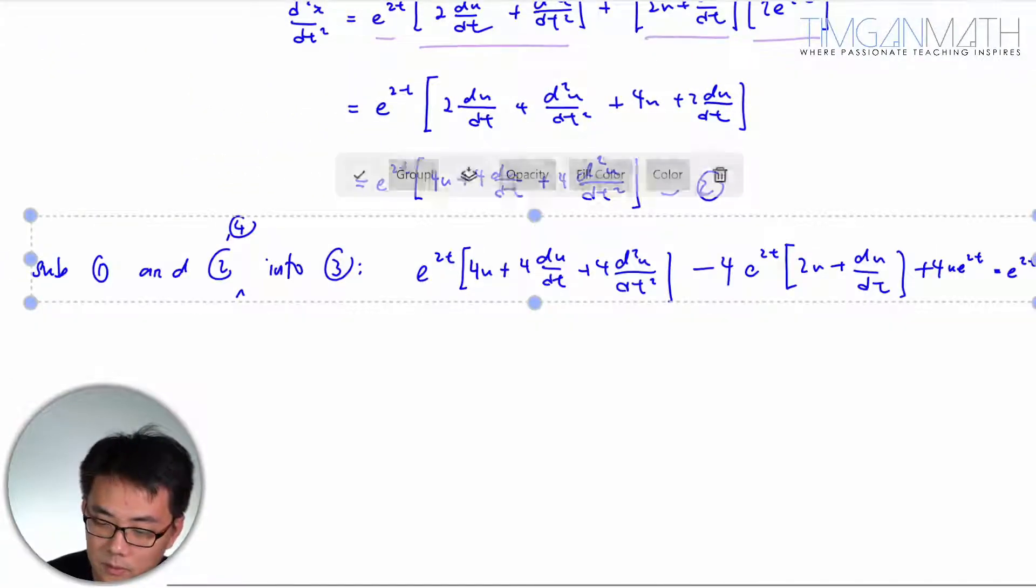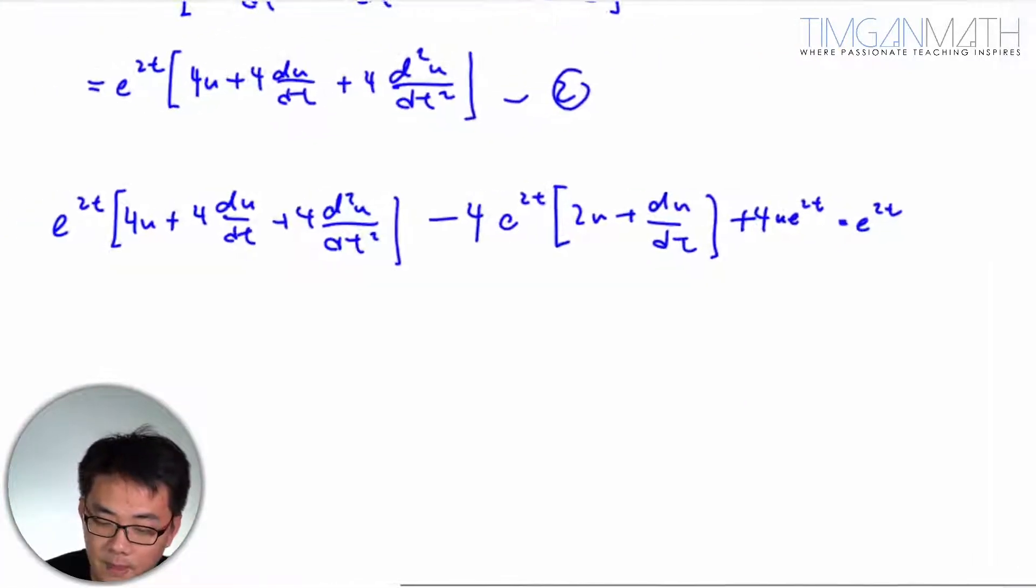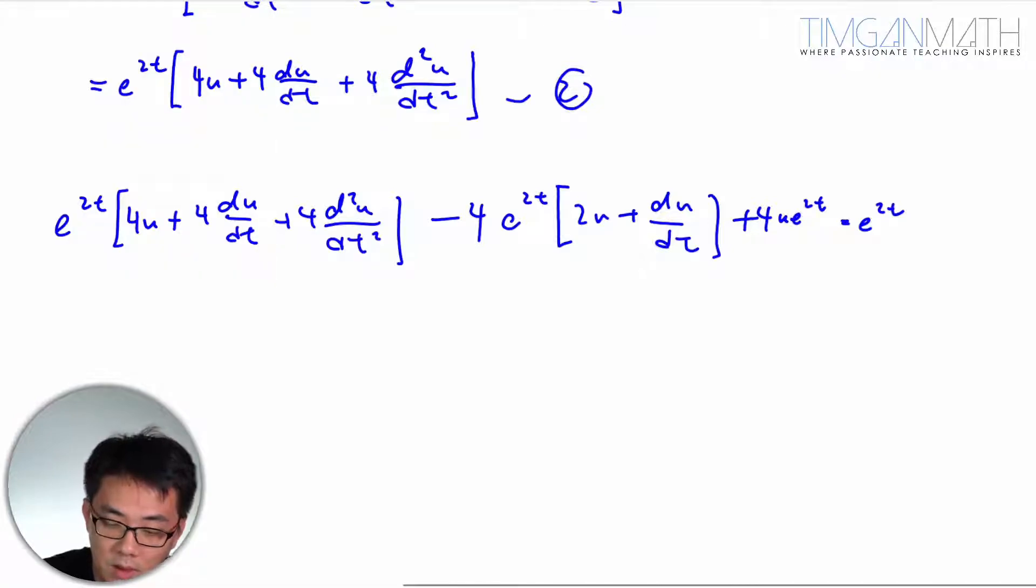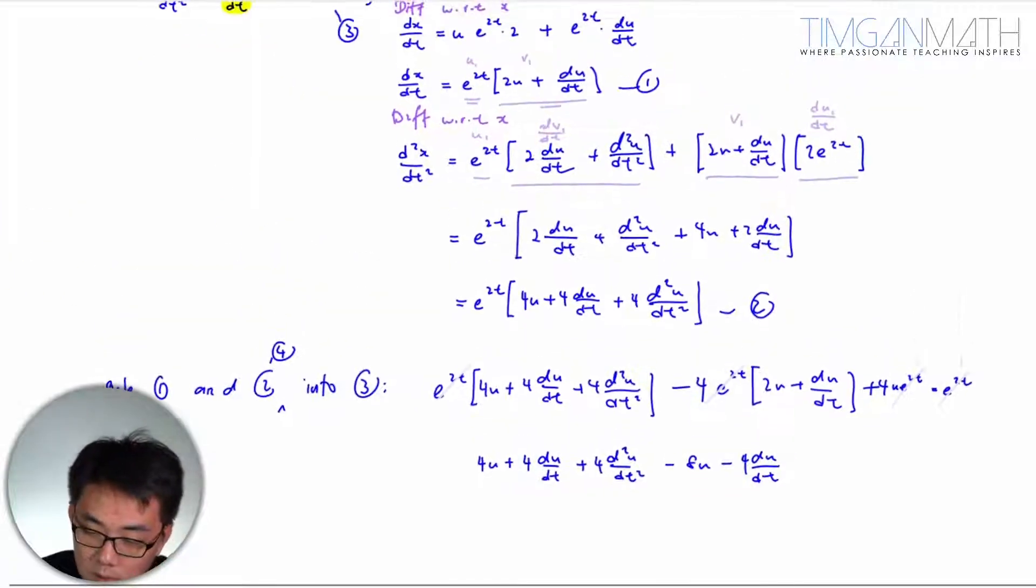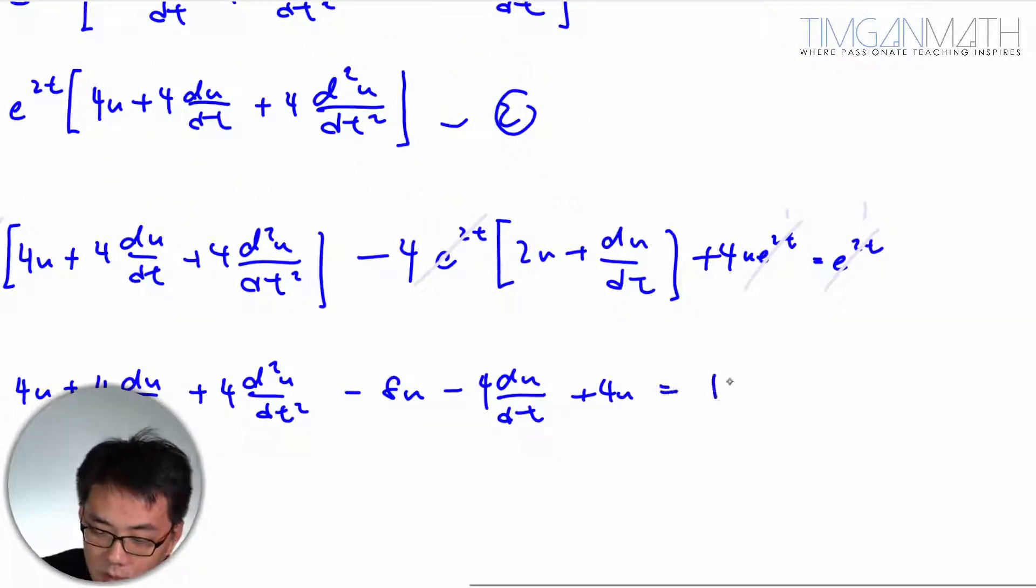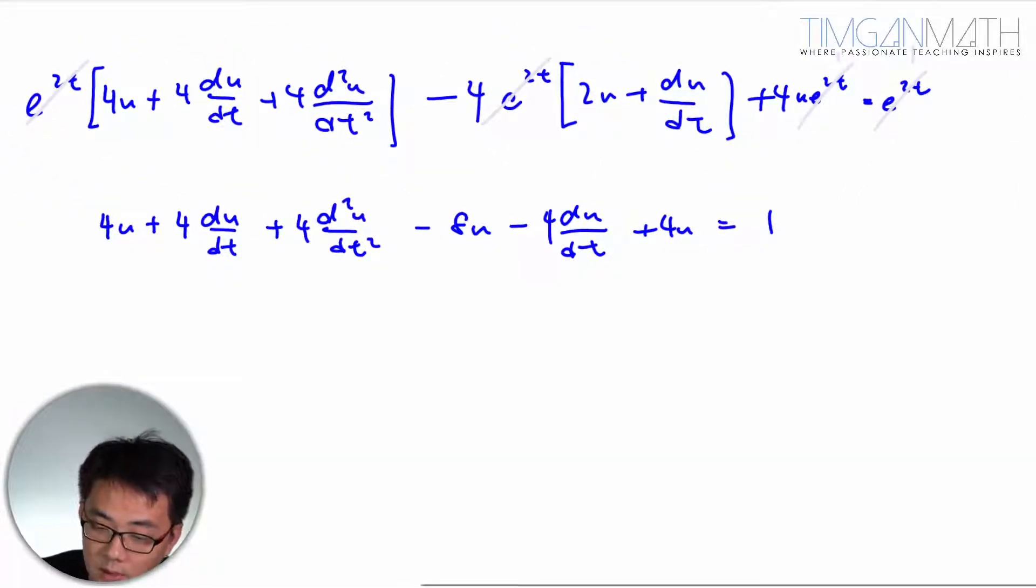After canceling e^(2t), we get 4u + 4du/dt + 4d²u/dt² - 8u - 4du/dt + 4u = 1. The 4u and -8u and +4u cancel out, giving zero. The 4du/dt and -4du/dt cancel each other. This leaves 4d²u/dt² = 1, so d²u/dt² = 1/4.